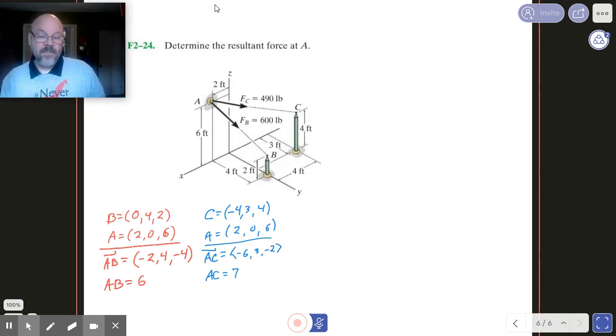So I've worked that out there already. So we've got beginning point A, end point B, gives us the vector AB. And then beginning point A, end point C gives us the vector AC. And I went ahead and got the magnitude for those as well.